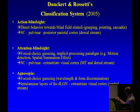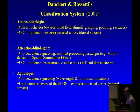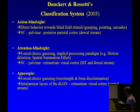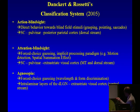There is also action blindsight, coined by Dan Kurt and Rossetti, involving direct behavior towards blind stimuli such as grasping, pointing, or locating by saccades. The pathway is the superior colliculus, pulvinar, and posterior parietal cortex — the dorsal stream. Then there's attention blindsight involving forced choice guessing, where you can test motion direction or spatial summation effects. Here the pathway is superior colliculus, pulvinar, extrastriate visual cortex. This is what we're going to talk about here.